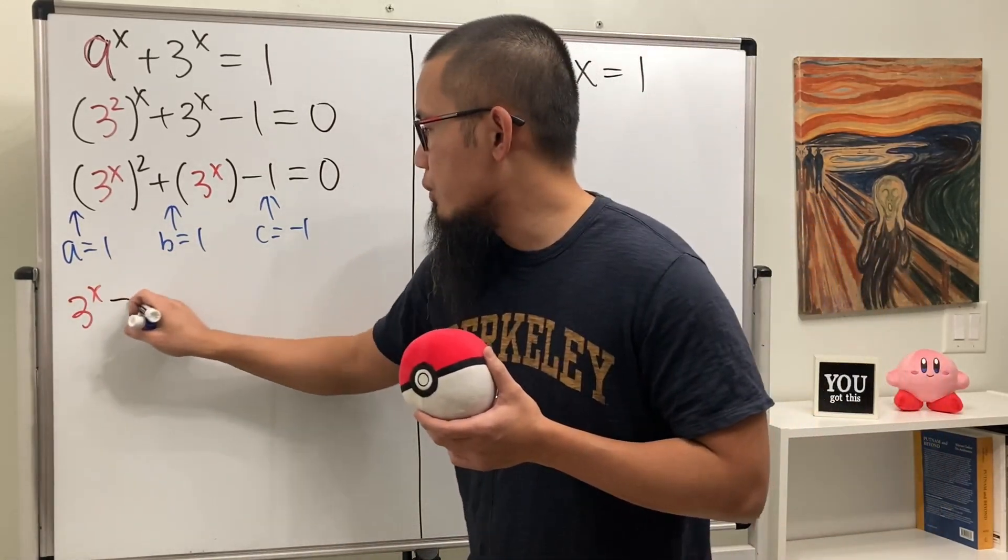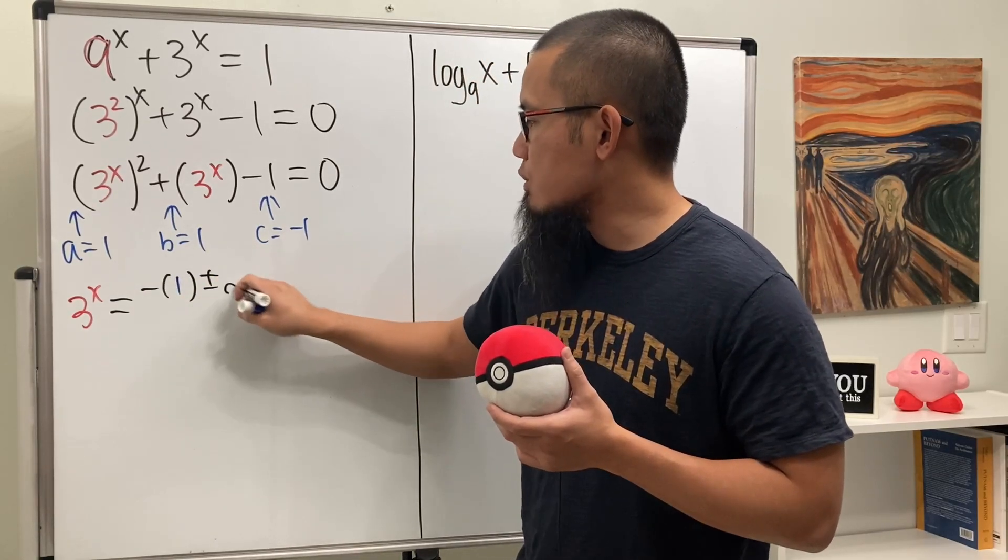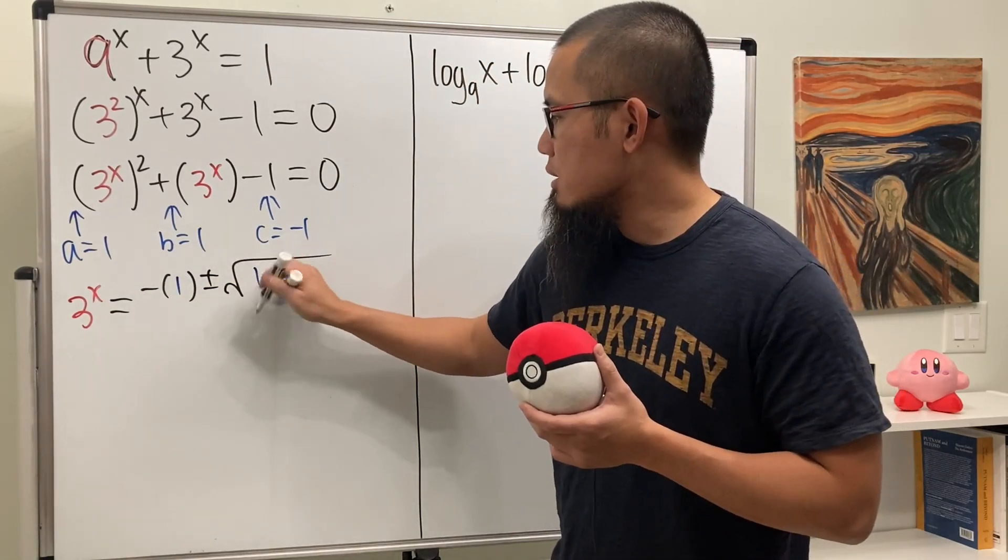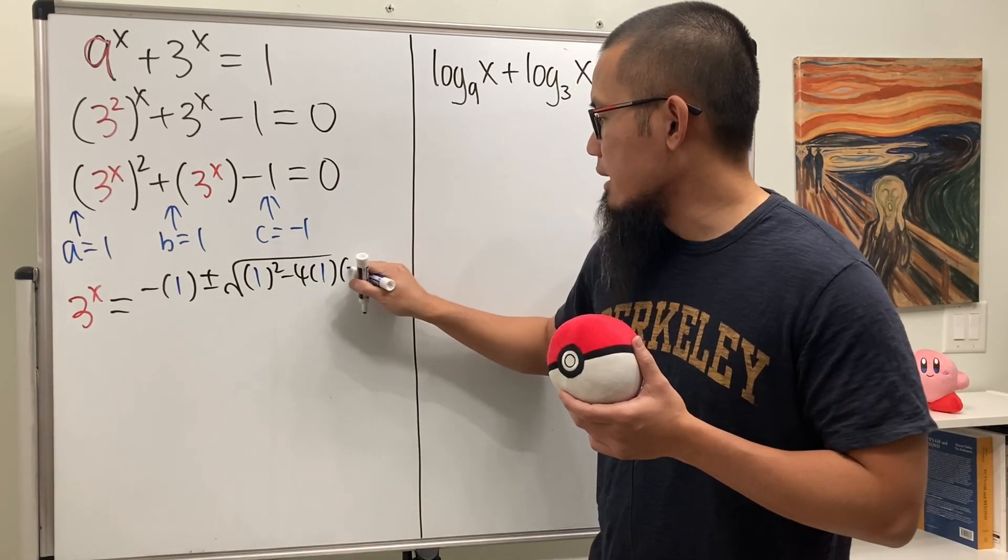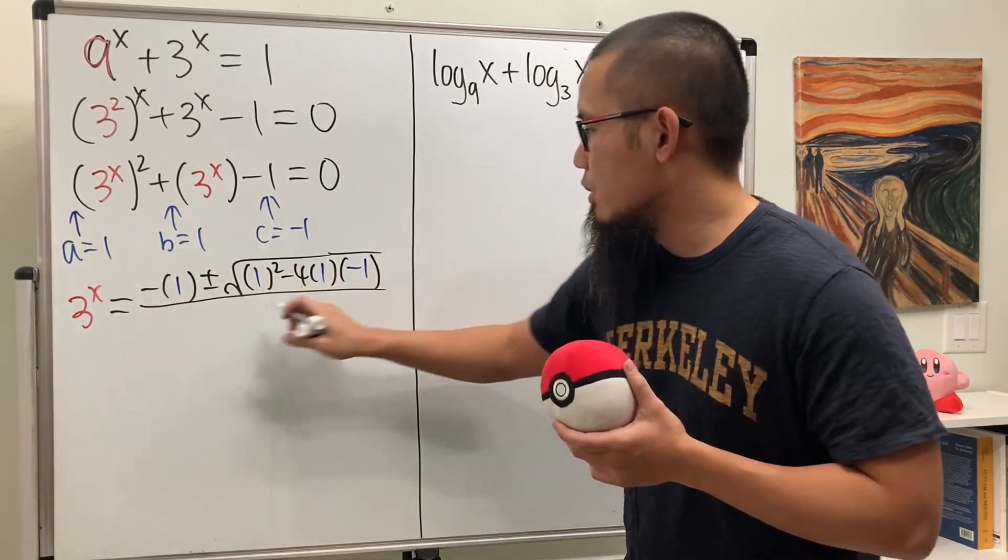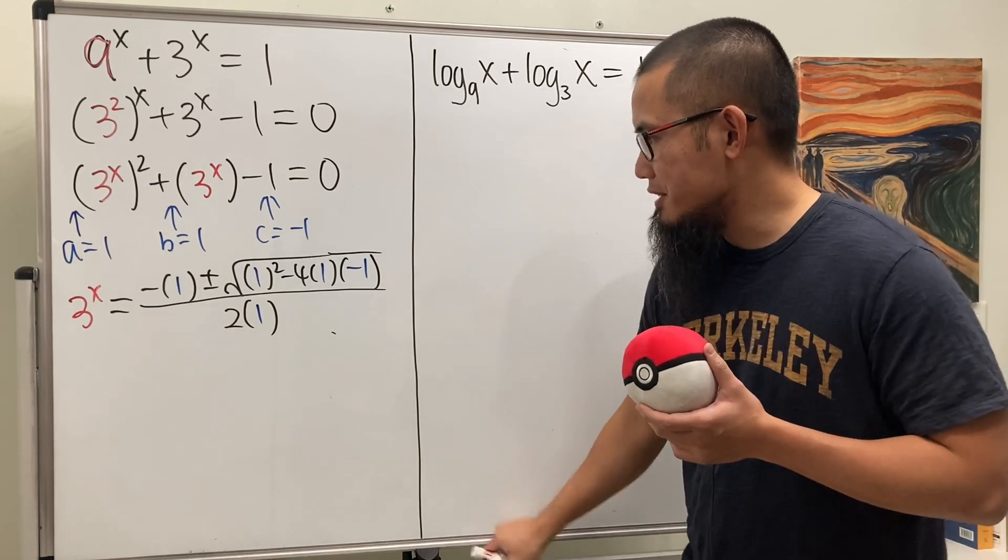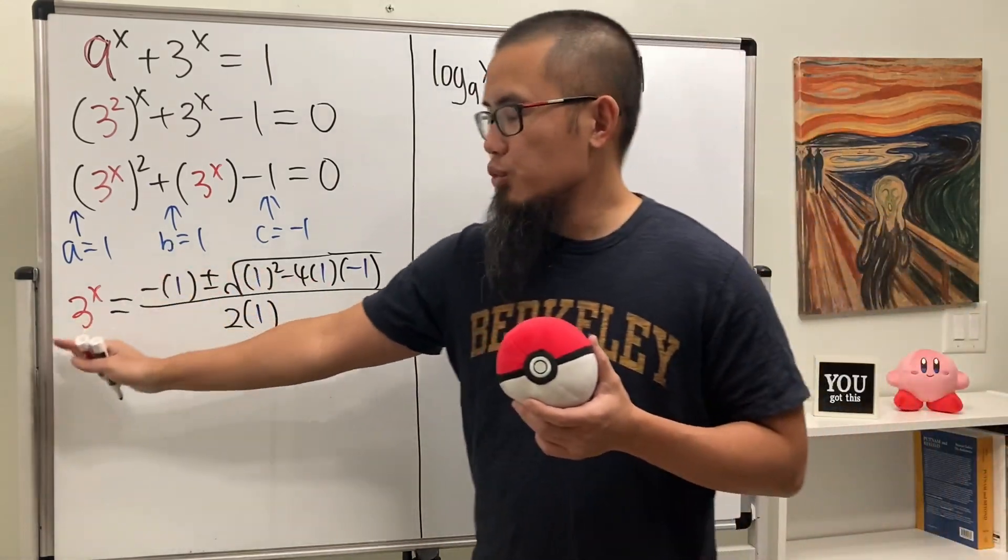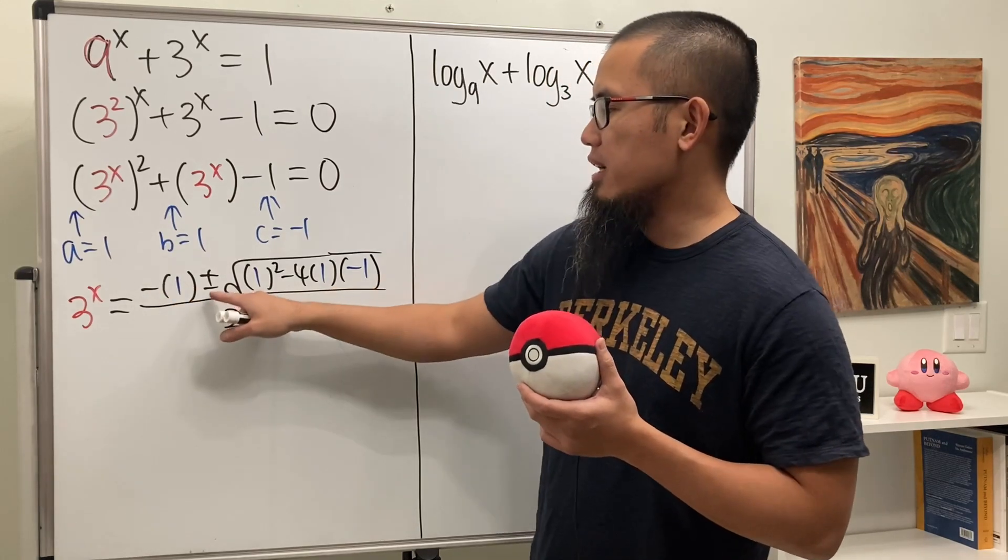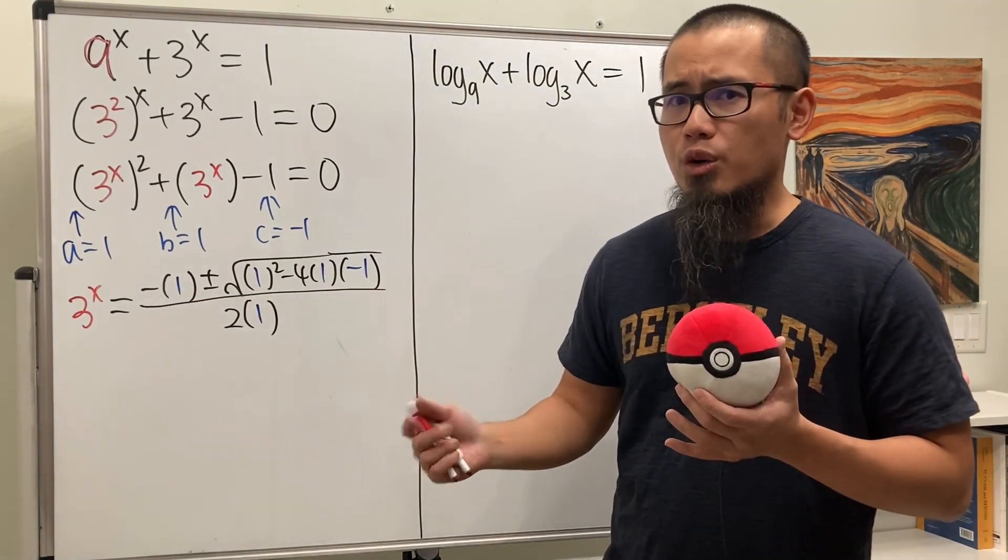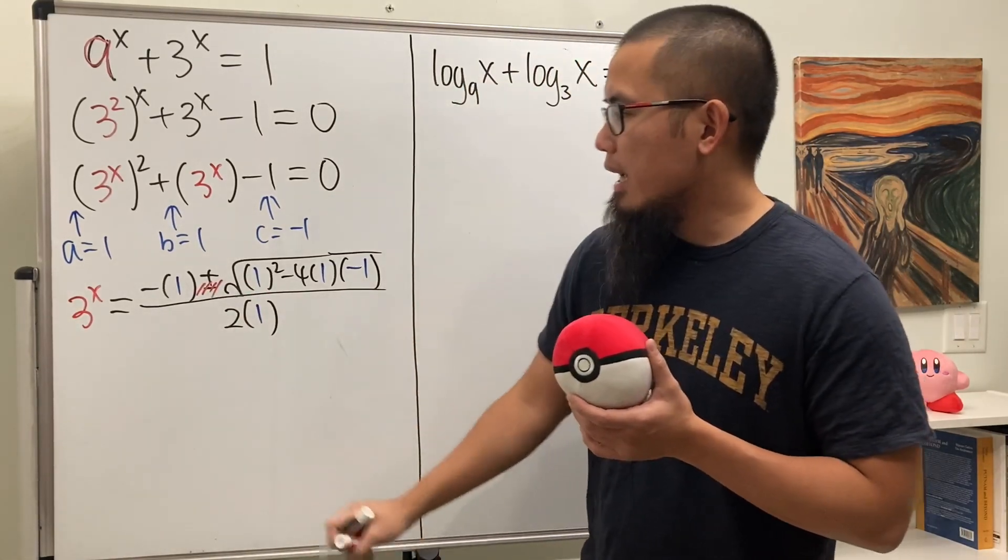Applying the quadratic formula, we know that 3 to the x power is going to be equal to negative b, which is negative 1 like this, and then plus or minus square root of b squared minus 4ac, all over 2a. Now you will see that 3 to the x is always positive, so if you have negative here and negative here that will give you a negative result which is not possible, so we are going to rule out the negative here.